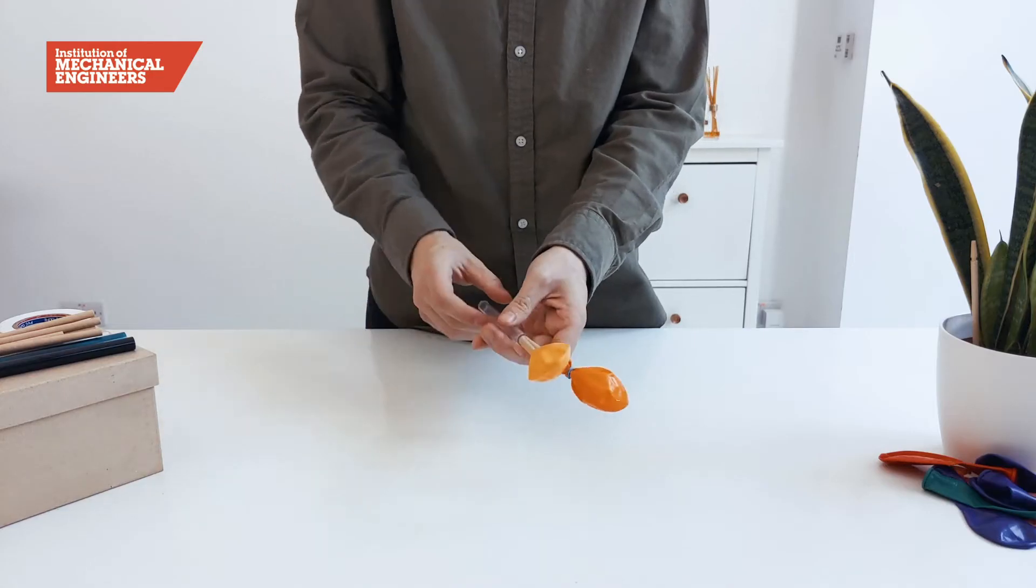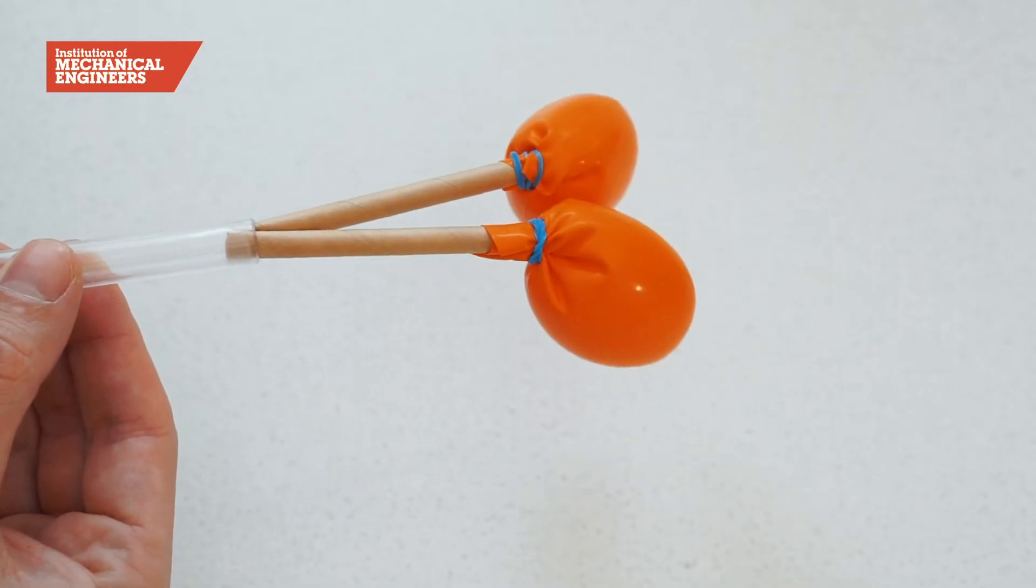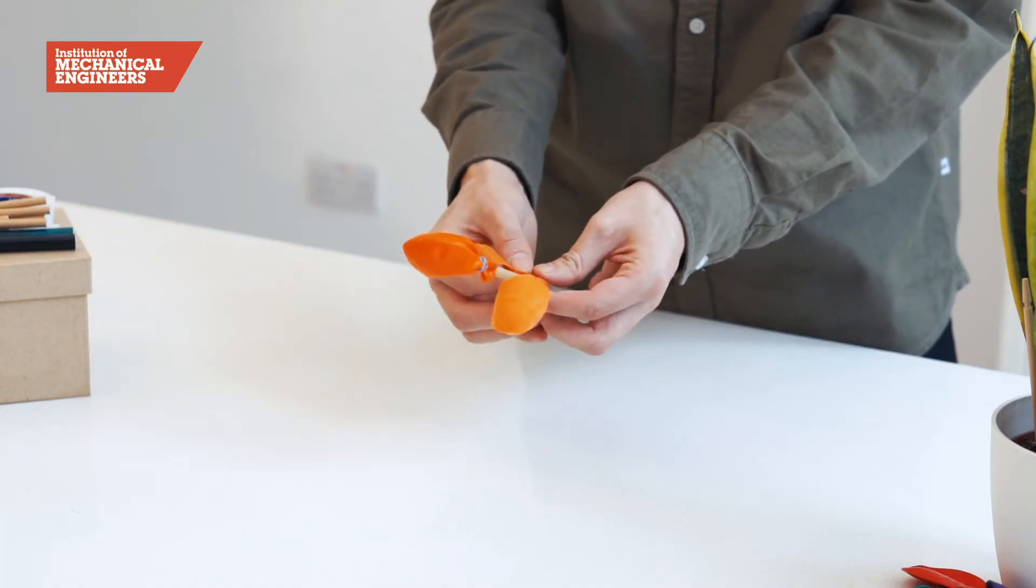To test the flow of air we will blow into the straw to make sure that both balloons inflate before sealing any gaps at the end of the smoothie straw with some tape.